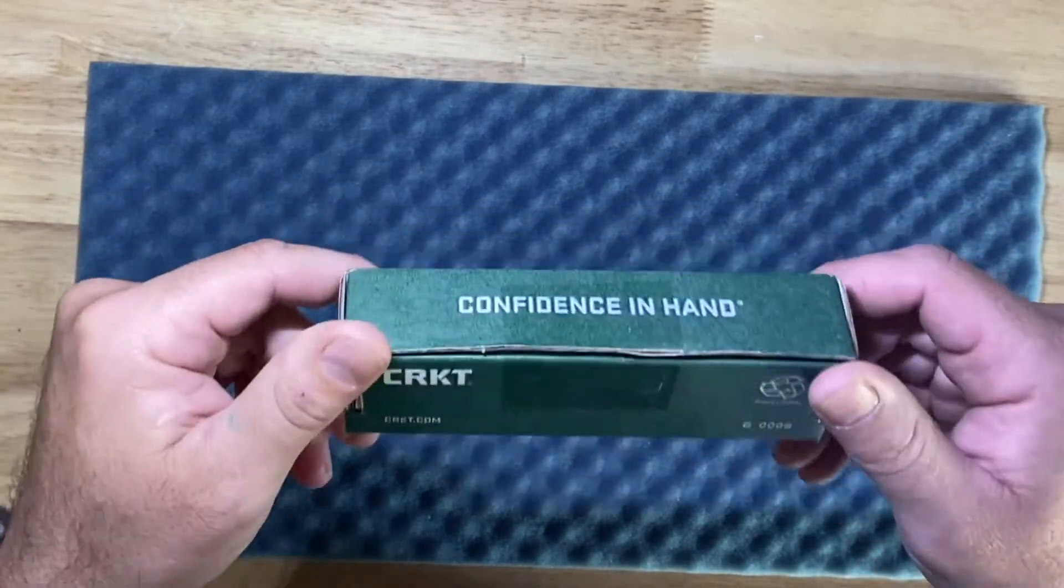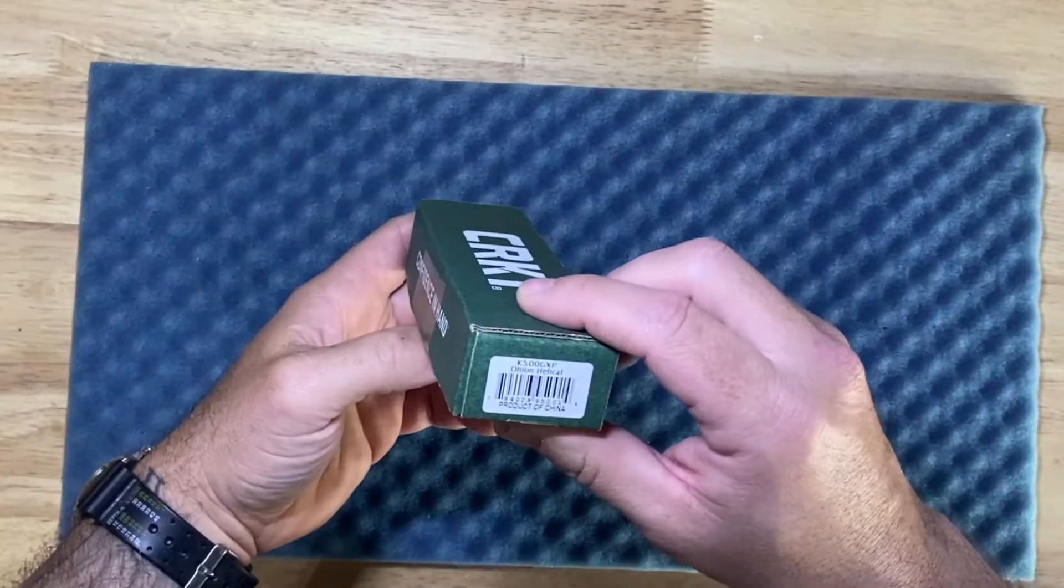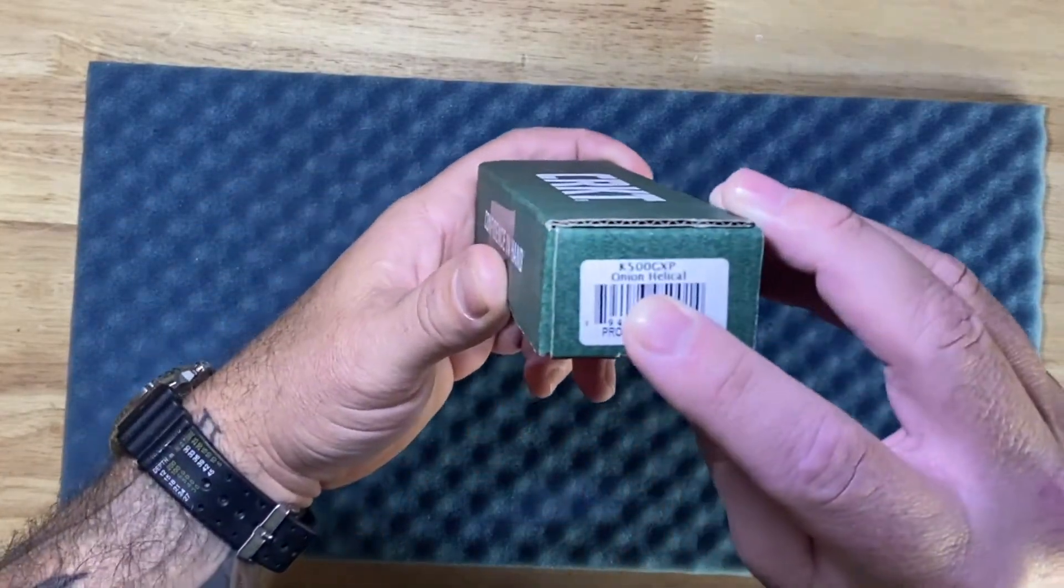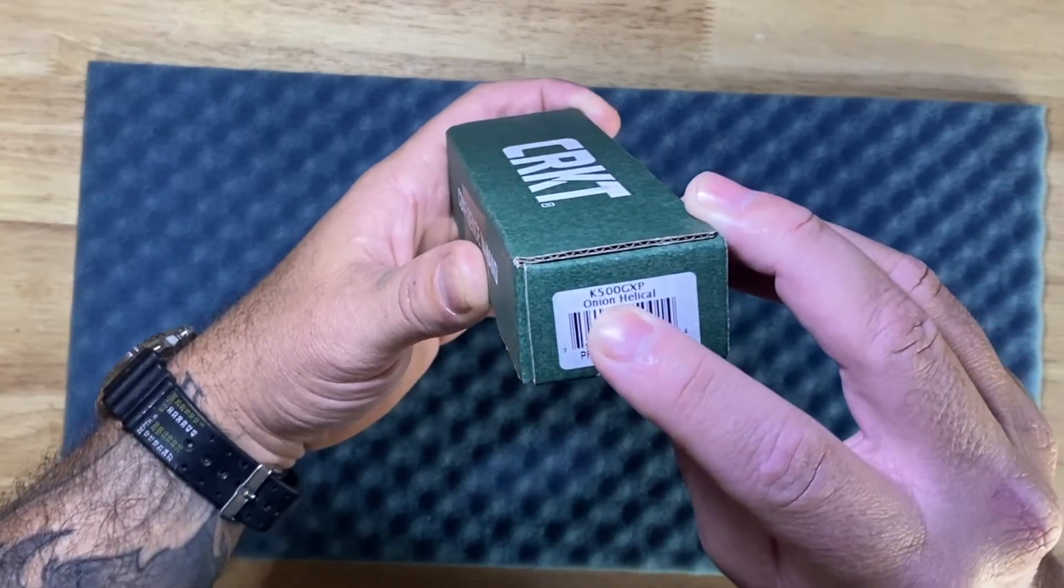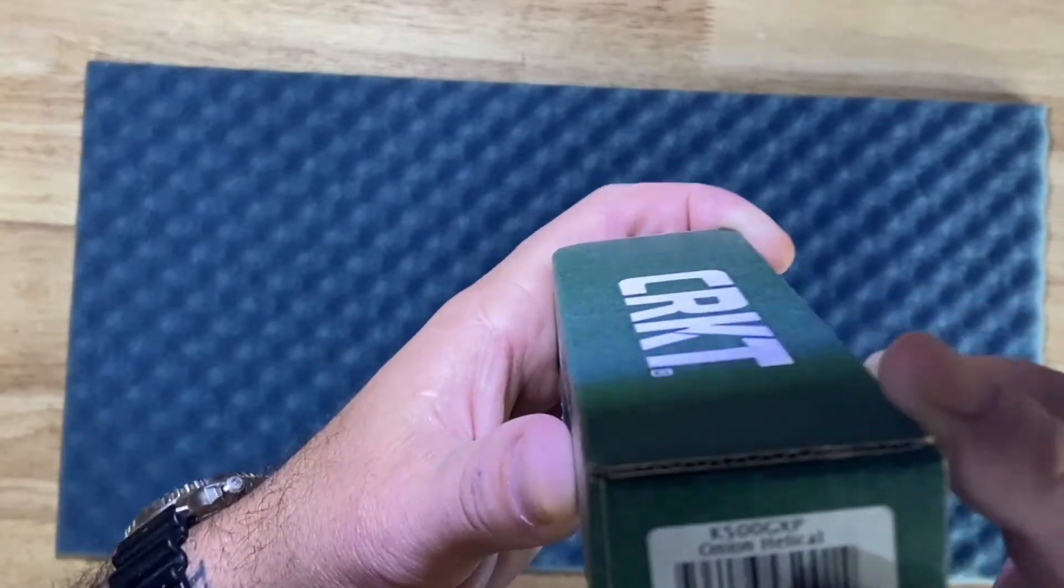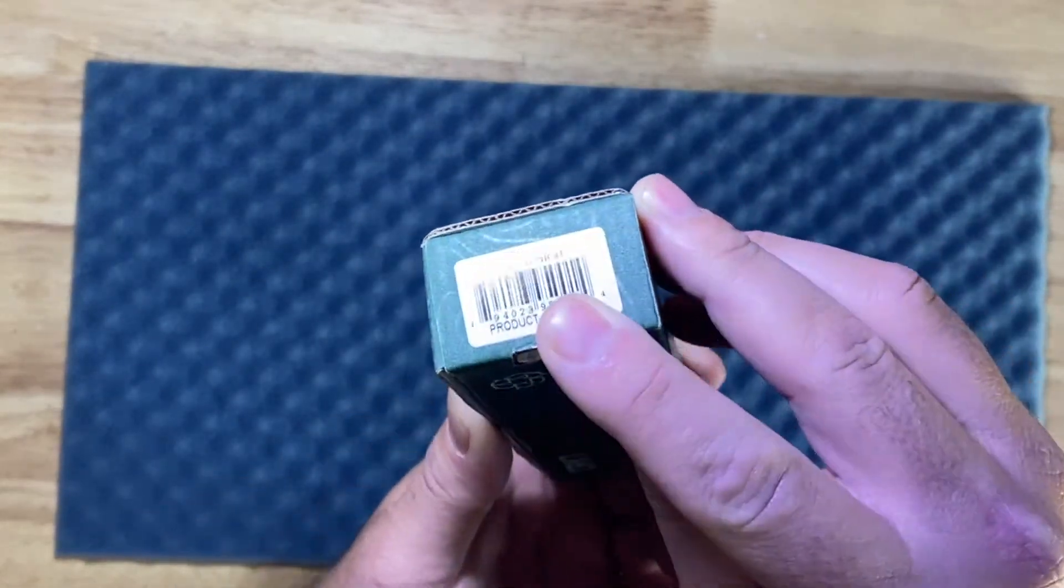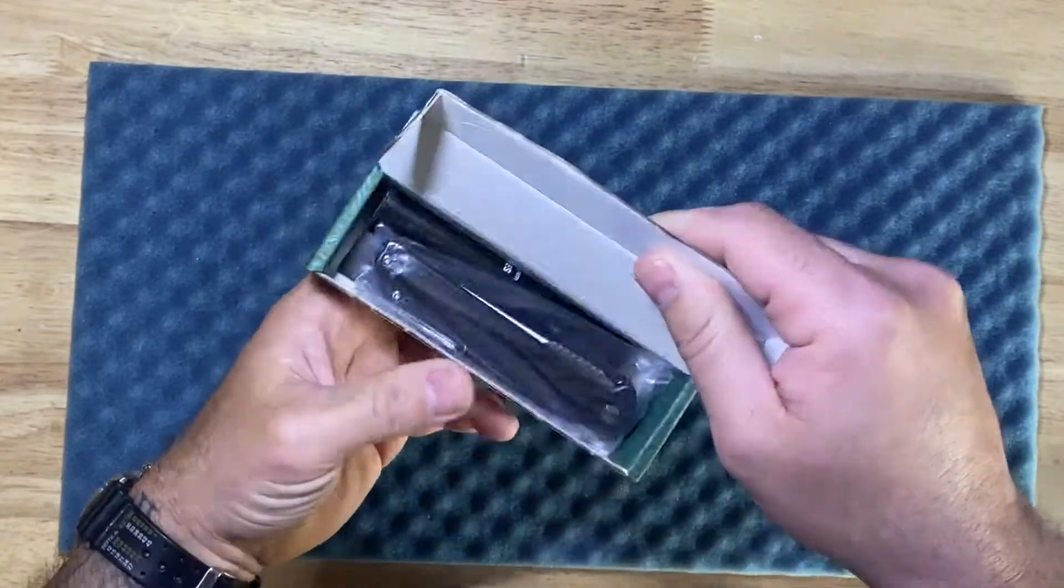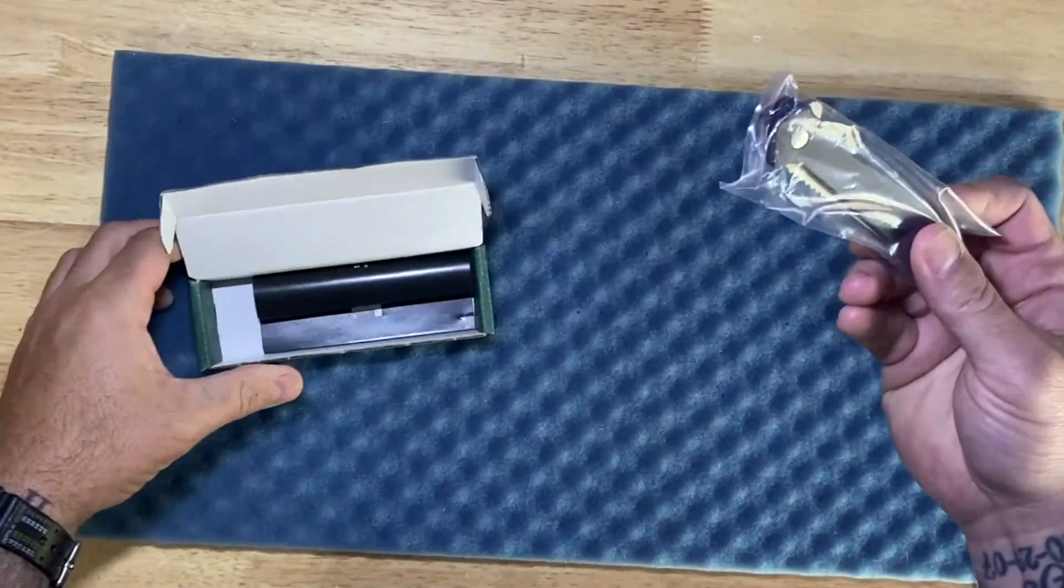So right away, this is the box that it comes in. Looks like your ID number here is K500GXP. Let's get that right. Alright, so open it up. It comes in this plastic little bag.